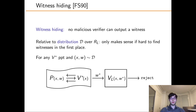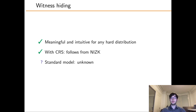Witness hiding means that after seeing the proof, the verifier cannot recover a valid witness for the instance. Formally, for any malicious verifier, the probability that it outputs some W* accepted by the NP verifier is negligible. Witness hiding is an average-case notion — we must define a distribution D over the witness relation, and witness hiding is only possible if it's hard to find witnesses for D in the first place. In the CRS model, it's easy to achieve; every NIZK is also witness hiding. However, it is currently unknown whether witness hiding proofs exist in the standard model, bringing us to our results.